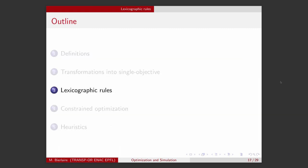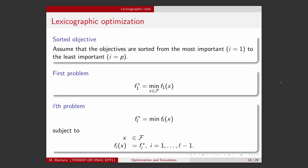Let's now consider other methods that do not combine the objective functions into a single one. The first one is called lexicographic rules. The idea is that we sort the objectives by degree of importance. So, we consider the most important objective first, i equals one. And the least important will be the last one, i equals p.